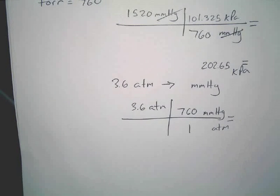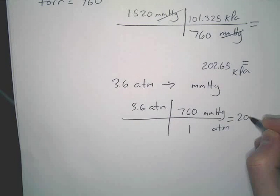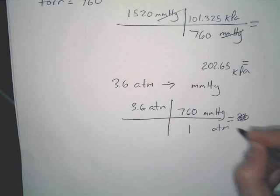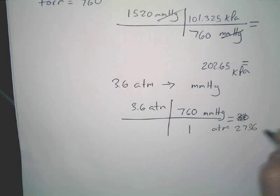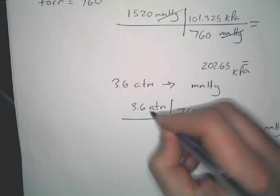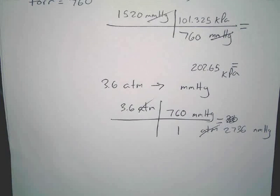So what does that come out to be? 2,736. 2,736. Notice your atmospheres cancel again, and that's all you've got to do.